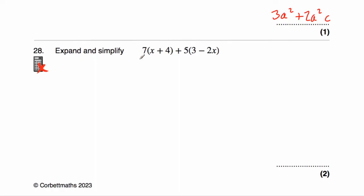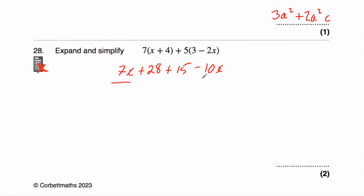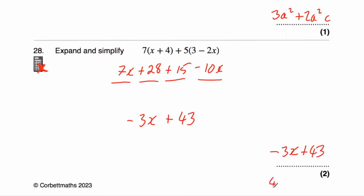Question number twenty-eight asks us to expand and simplify 7(x + 4) + 5(3 − 2x). Let's multiply out each bracket: seven times x is 7x, plus seven times four is 28. Then five times three is plus 15, and five times minus 2x — positive times negative is negative — five times two is ten, so minus 10x. Collecting like terms: 7x − 10x is −3x, and 28 + 15 is 43. The answer is −3x + 43.